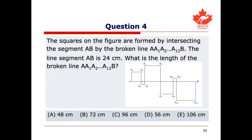Let's get into the last question. Question 4 asks: the squares on the figure are formed by intersecting segment AB with broken line AA1-A2-A12-B. The line segment AB is 24 centimeters. What is the length of broken line AA1-A2-A12-B? Answer choices are: A) 48 cm, B) 72 cm, C) 96 cm, D) 56 cm, E) 106 cm. Please pause and try this on your own.